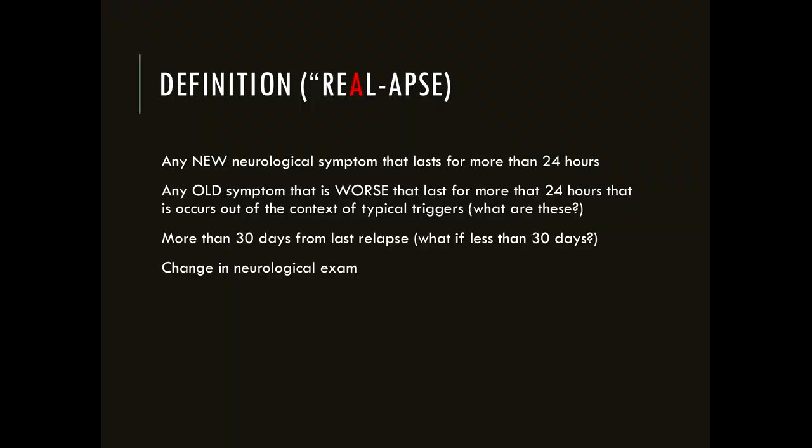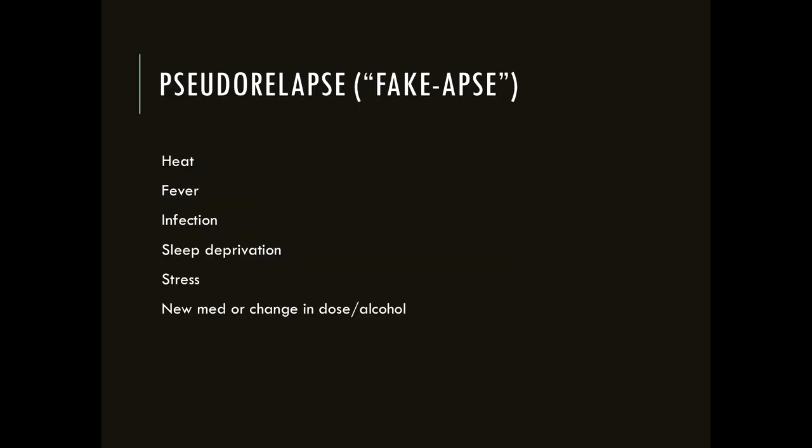Ideally, a neurological examination should find objective evidence of a change in neurological status. We measure this using the Expanded Disability Status Scale (EDSS) and functional system evaluations. In clinical trials, a relapse is defined as a change of two or more in one functional system, or a change of one or more in two functional systems. Other terms used for relapses include episode, exacerbation, and flare-up.